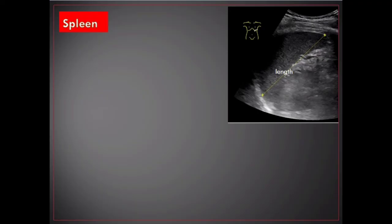Spleen. The measurement of spleen length is the maximal distance, ideally at the hilum, on the longitudinal coronal view between the most superomedial and most inferolateral points. The upper limit of normal adult splenic length is traditionally cited at 12 centimeters, but lengths upward of 14 centimeters can be seen in normal tall males.